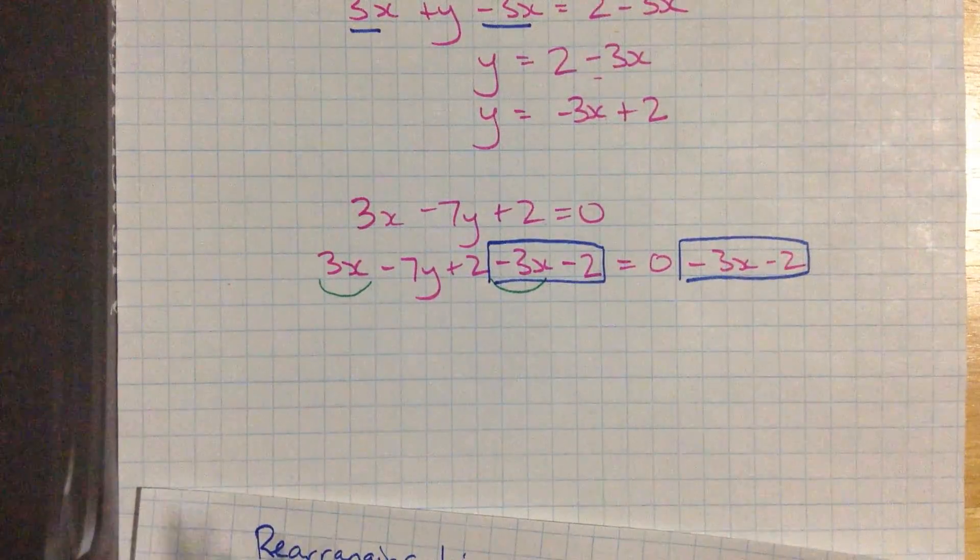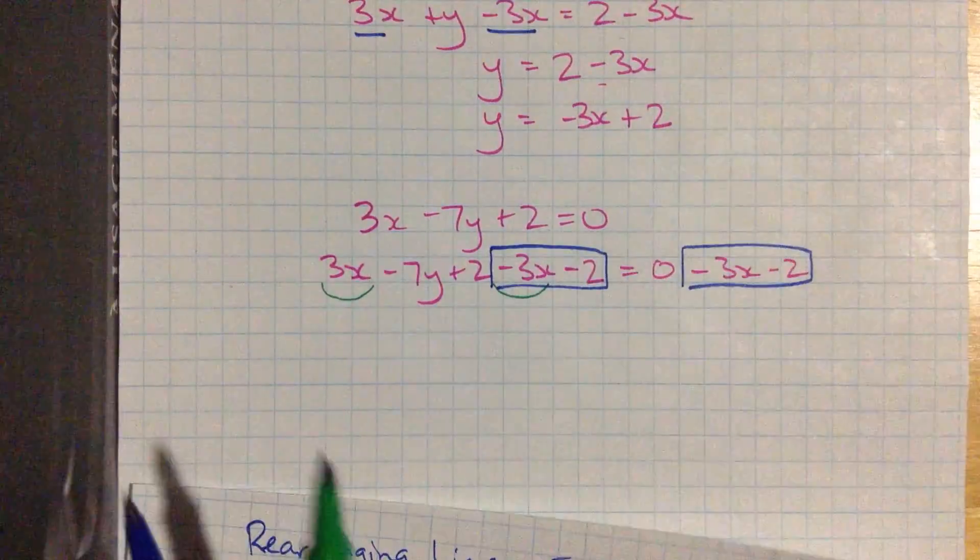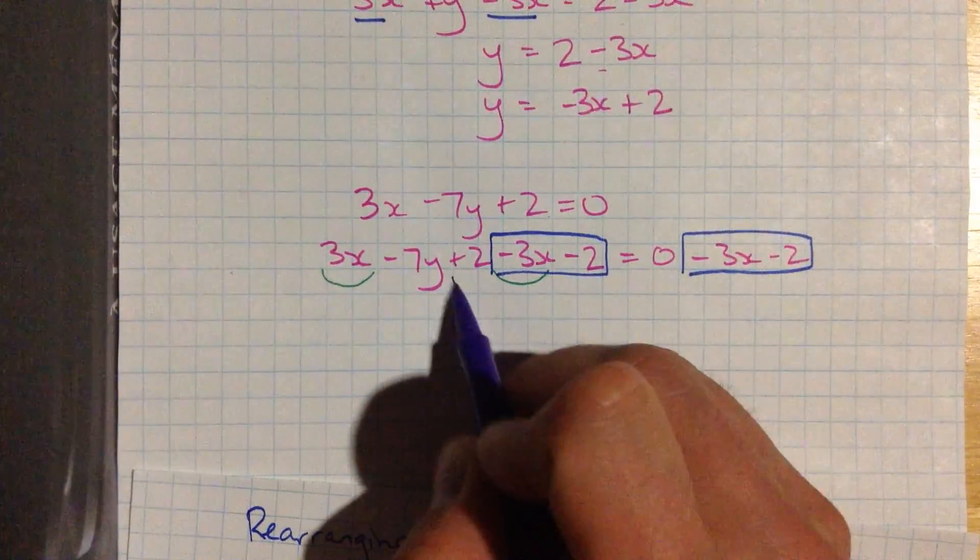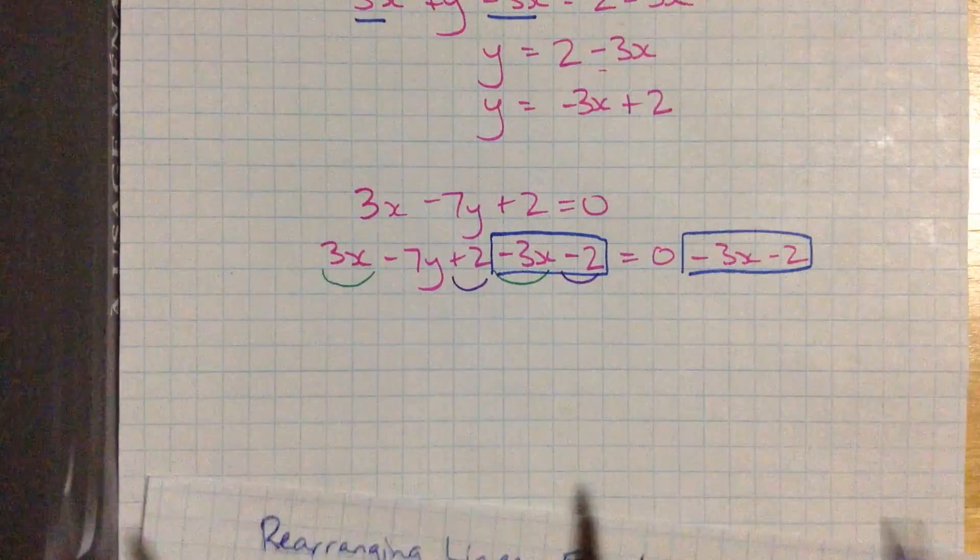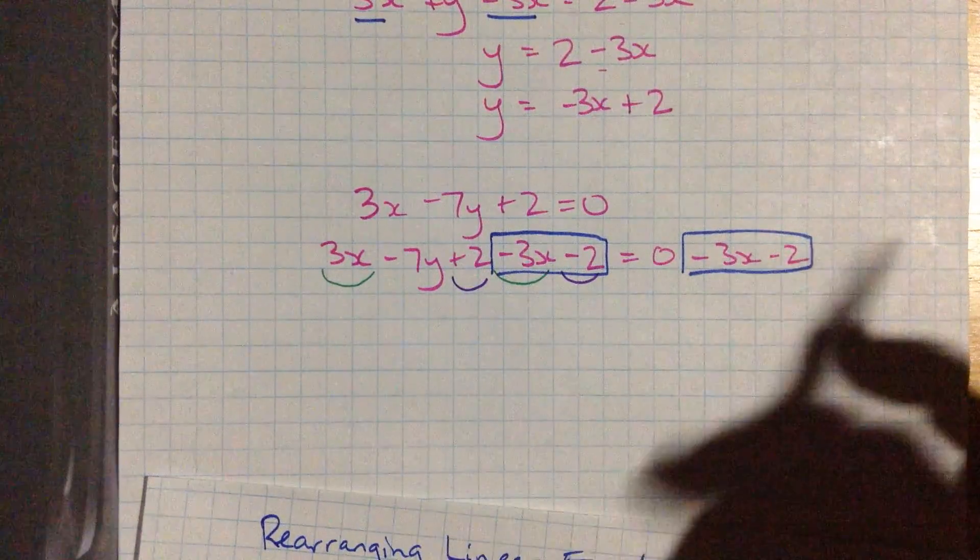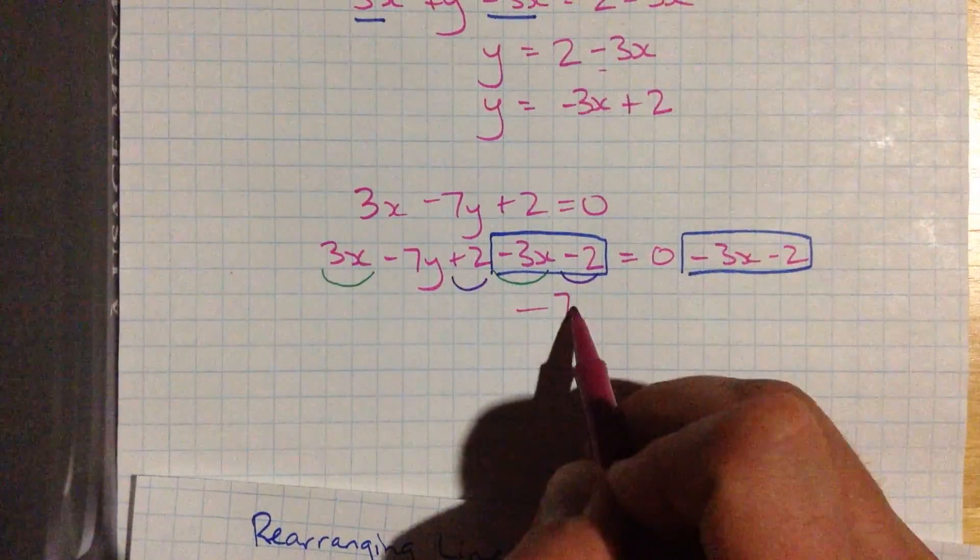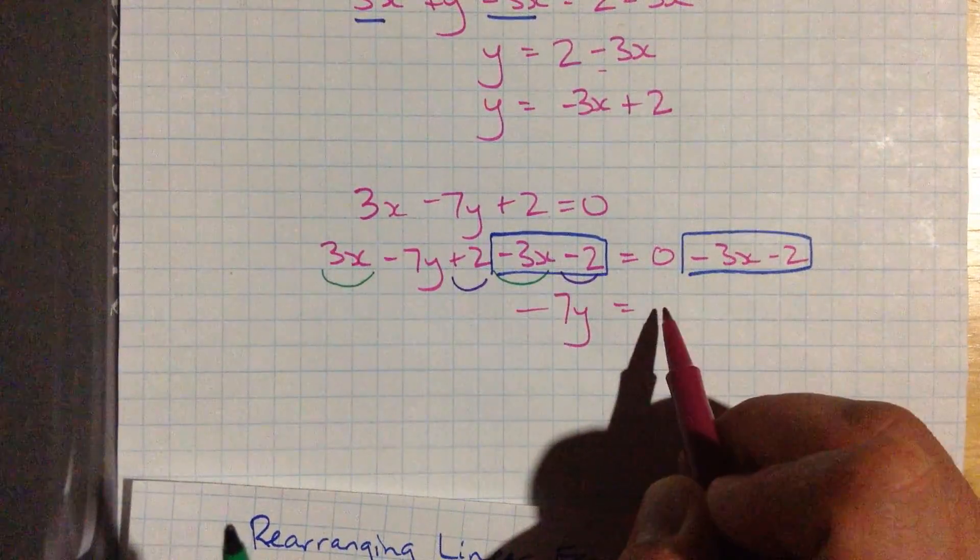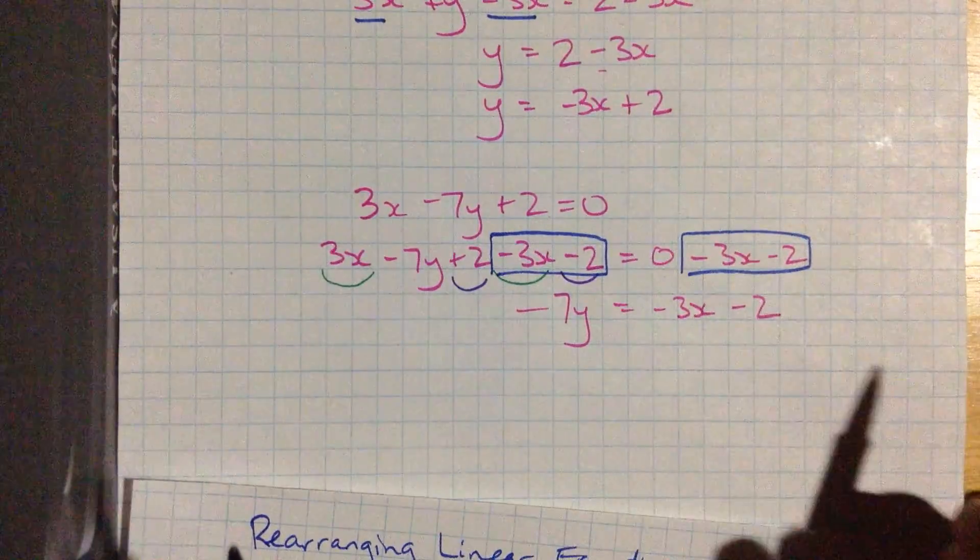3x and minus 3x. And here I've got positive 2 and then negative 2. I'm subtracting over there. So those things are kind of all going to cancel each other out. And I'm left with just negative 7y on this side. Over here I've got negative 3x minus 2.